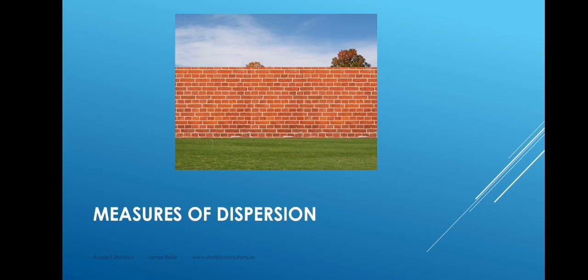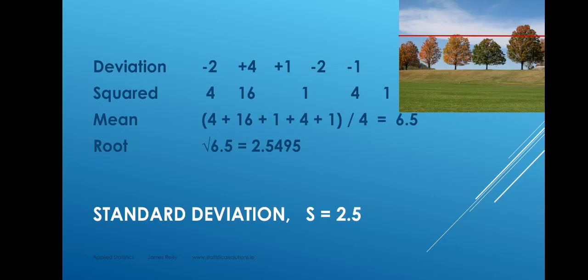We call these differences deviations — the difference between an individual number and the mean of the data set. We want to measure the dispersion: are the numbers close together or far apart? We list the individual deviations — how different is each tree's height from 24: minus 2, plus 4, plus 1, minus 2, minus 1. We then square those values so they all become positive, take the mean of those squared deviations dividing by n minus 1, and then take the square root to compensate for having squared them. That gives us approximately 2.5.